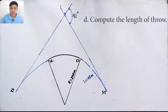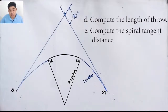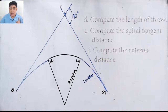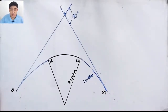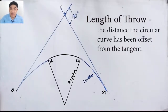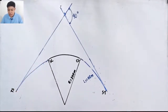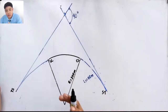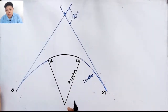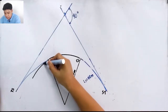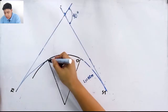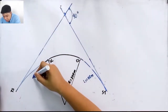We are asked to find the length of throw, the tangent distance, and the external distance. The length of throw is the distance the circular curve has been offset due to construction of the spiral curve. To visualize it, imagine the circular curve extended in its original position such that its tangent at that point is in the same direction as the tangent at TS.